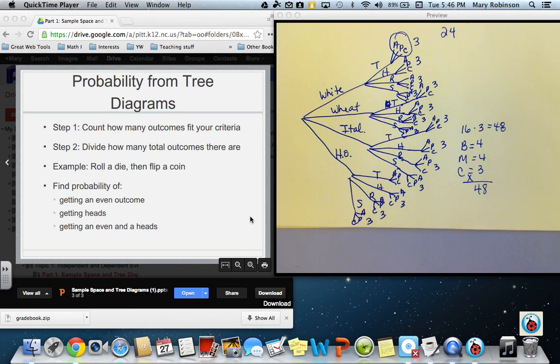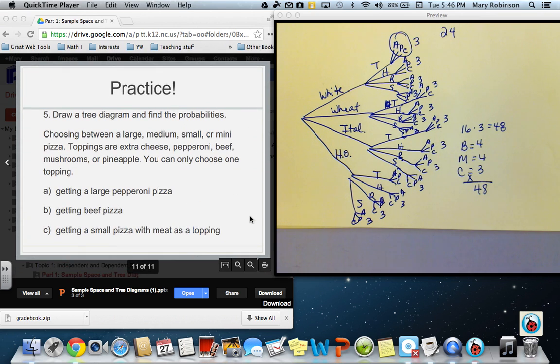If we wanted to roll a die, then flip a coin, and then find the probability of getting an even outcome, then the probability of getting an even outcome would be any outcome where when we rolled a die, we had a 2, 4, or 6. We could find the probability of getting heads or even and heads. So let's practice.